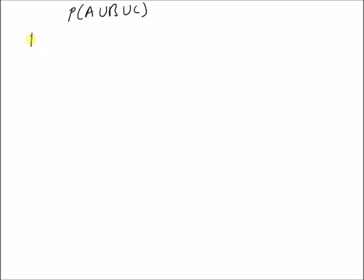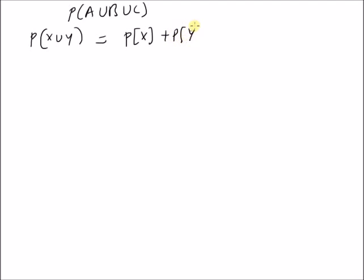We know that for two events X and Y, the probability of X union Y is equal to probability of X plus probability of Y minus the probability of X intersection Y.